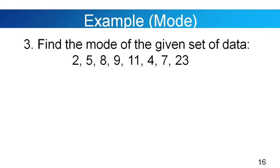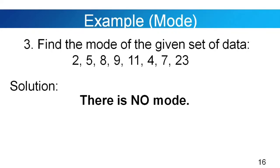Example number 3. Find the mode of the given set of data: 2, 5, 8, 9, 11, 4, 7, 23. Since no values appear more than once, there is no mode in this data set.